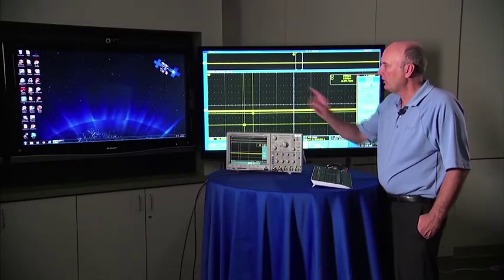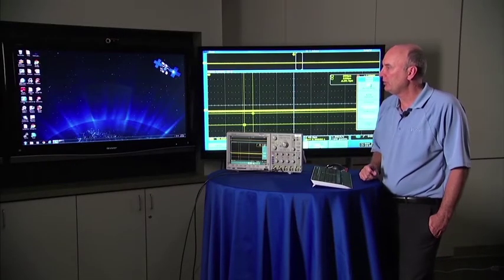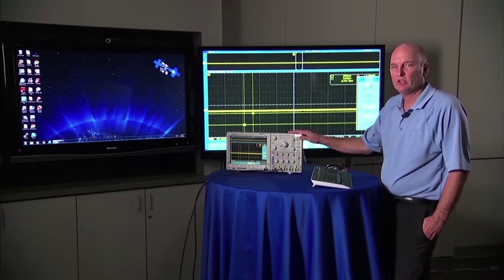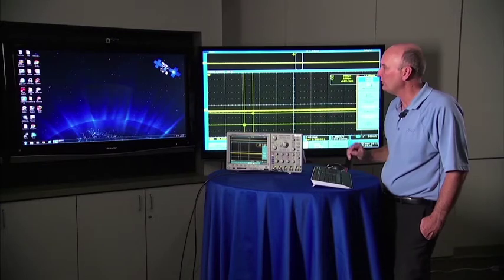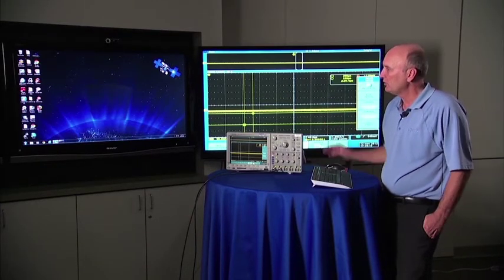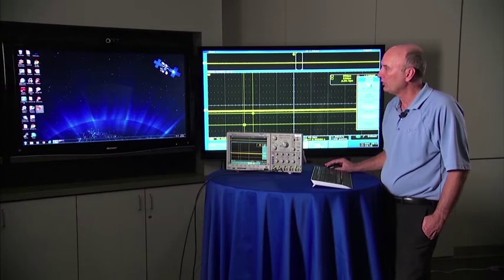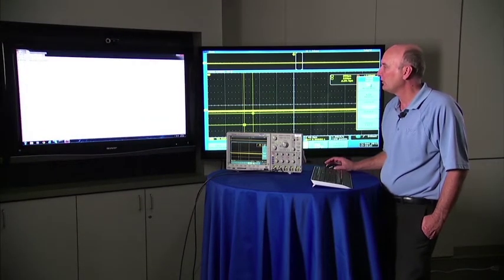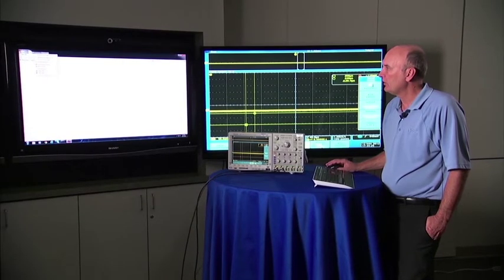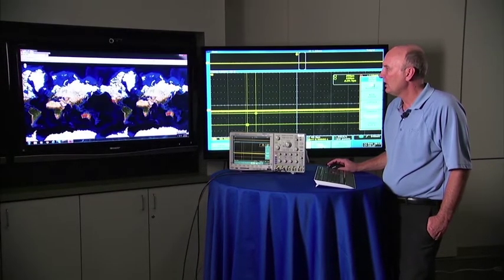All right, so what I have set up right now is our laptop monitor is being projected to this screen and then our system under test which is our oscilloscope is being projected to this screen. As I said there's no software installed on the laptop so we just bring up our browser of our choice. We'll bring up Mozilla Firefox for this and then I have it bookmarked to the VRG1000.